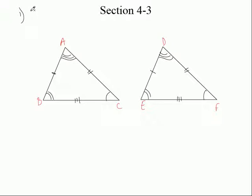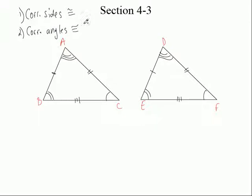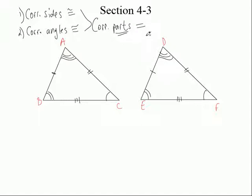So watch — a couple things are true: the corresponding sides of the two triangles are equal, or congruent if you want to say that. And the corresponding angles would be congruent to each other. The corresponding sides are equal; the corresponding angles are equal. In general, we call these the corresponding parts. What parts are there to a triangle? Basically there are only two parts — angles and sides. The sides and the angles are the corresponding parts. So the corresponding parts are equal to each other.